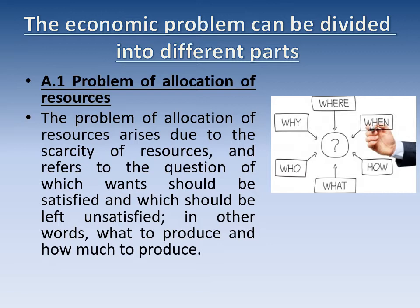It refers to the question of which needs should be satisfied and which should be left unsatisfied — لازم يكون عندي priorities، أولويات. In other words: what to produce and how much to produce. دي أساس المشكلة الاقتصادية — what to produce, how to produce, for whom to produce, and how much to produce. It depends on studying very well the needs of every society, and it differs of course from one society to another.